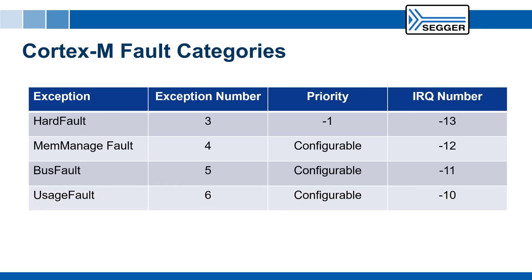The usage fault exception is raised on execution errors. Unaligned access on load, store, and multiple instructions are always caught. Exceptions on other unaligned access, as well as division by zero, can additionally be enabled in the SCB. When usage fault is not enabled, a hard fault exception is raised instead.